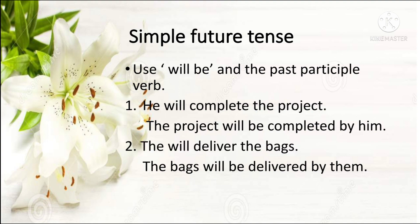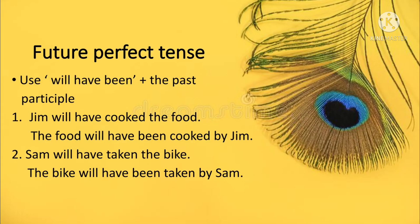In the future perfect tense, use will have been and the past participle verb. Jim will have cooked the food — the food will have been cooked by Jim. Sam will have taken the bike — the bike will have been taken by Sam. You are using the past participle verb all the time, so get hold of and know the past participle verb.